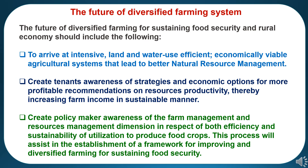The future of diversified farming for sustaining food security and rural economy should include: first, arriving at an intensive, land and water use efficient, economically viable agricultural system that leads to better natural resource management; second, creating tenant awareness of strategies and economic options for more profitable recommendations on resource productivity, thereby increasing farm income in a sustainable manner; third, creating policymaker awareness of farm management and resource management dimensions in respect of both efficiency and sustainability of utilization to produce food crops, assisting in establishing a framework for improving diversified farming for sustaining food security.